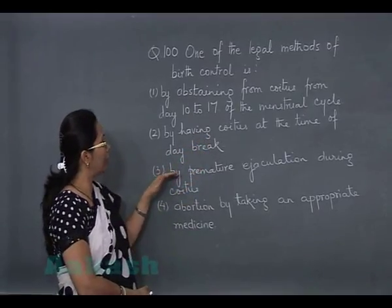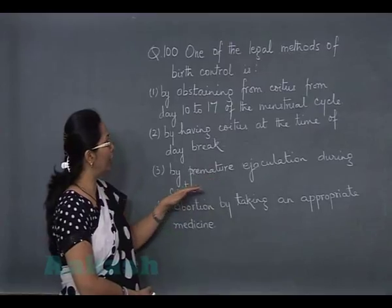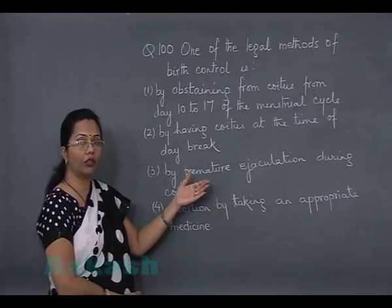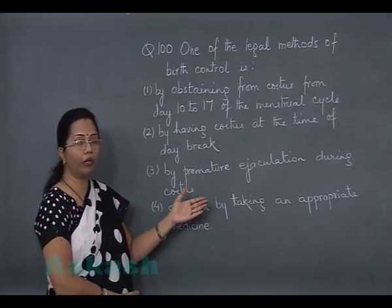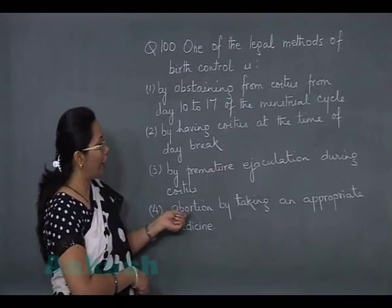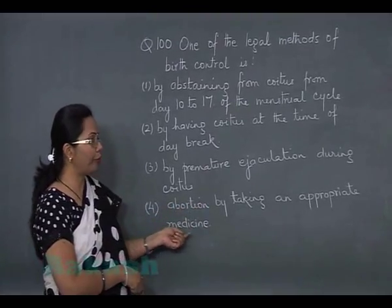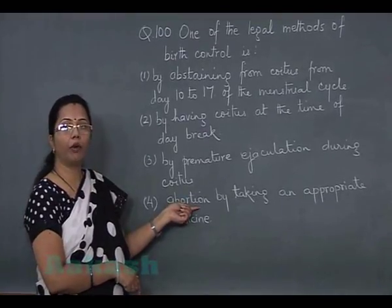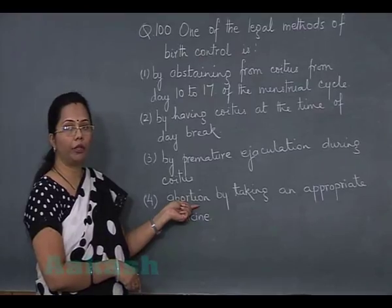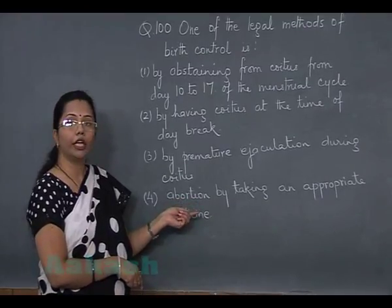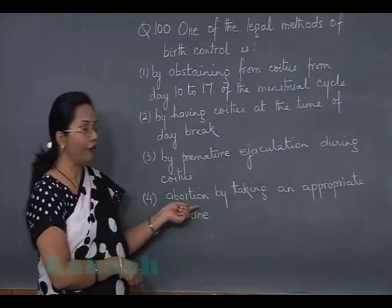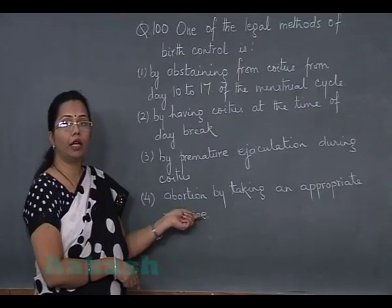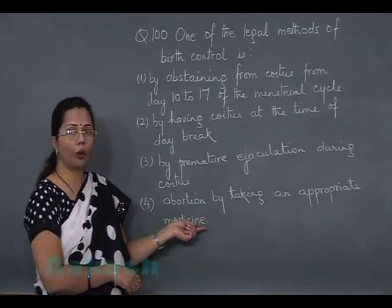Having coitus at the time of daybreak is a myth and has nothing to do with birth control. Premature ejaculation during coitus would rather result in fertilization than help in birth control. Option four — abortion by taking an appropriate medicine — has been legalized in India by the MTP Act passed in the Indian Parliament in 1971, to avoid illegal abortions by unregistered doctors or quacks which resulted in deaths.